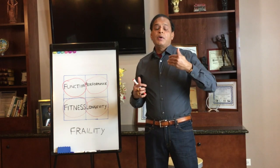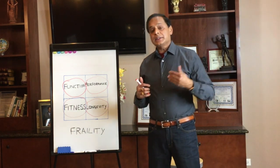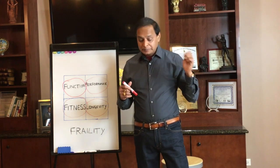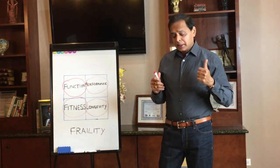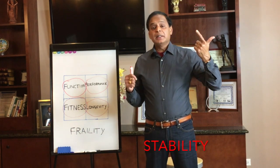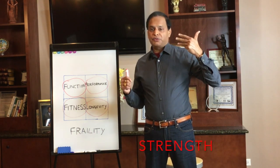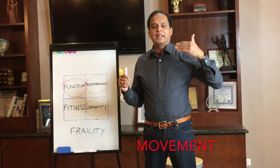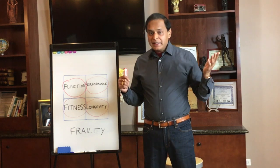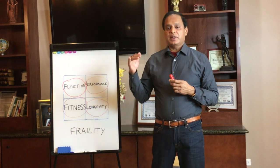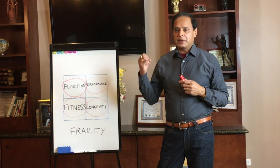At a physical level, the decline in functions that we can relate to as we age includes: balance, stability, strength, flexibility, posture, movement, reaction time, and speed. These are the declining physical functions we can observe as we age.